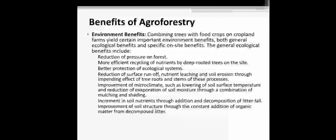Benefits of agroforestry. There are three main types of benefits. The first is environmental benefits. Combining trees with food crops on cropland and farms yields certain important environmental benefits — both general ecological benefits and specific on-site benefits. These include reduction of pressure on forests, more efficient recycling of nutrients by deep-rooted trees, better protection of ecological systems, and reduction of surface runoff, nutrient leaching, and soil erosion through the impeding effects of tree roots and stems.